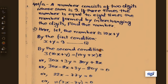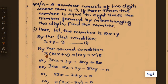From the second condition: 3 times the number means 3 into 10x plus y, equals 8 times the number formed by interchanging the digits, which is 10y plus x. So 3 into 10x plus y equals 8 into 10y plus x.